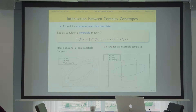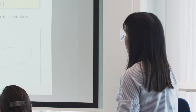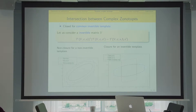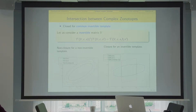For intersection between complex zonotopes: if two zonotopes share the same generators (same directions and forms), for an invertible template matrix we can take the mean of the scaling factors to define the intersection. However, if the template is not invertible, taking the mean of the scaling factors is not valid — the intersection will be much smaller.